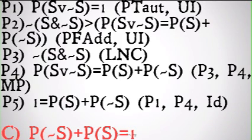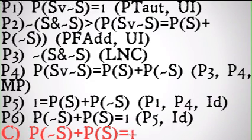Therefore, using the law of identity and steps one and four, we can replace the probability of S or not-S with one to get: one is equal to the probability of S plus the probability of not-S. And by rearranging via identity, we get the probability of not-S plus the probability of S is equal to one. Thus, we've proven our rule of probability.